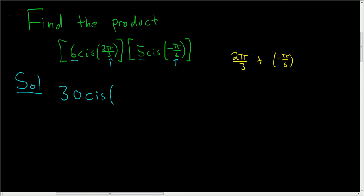So we want to have an LCD, so we'll multiply the first fraction by 2 over 2. So we get 4π over 6 minus π over 6, and that's 3π over 6, which is equal to π over 2.